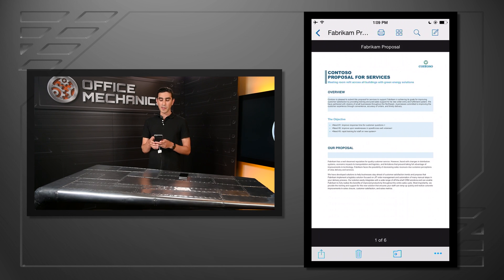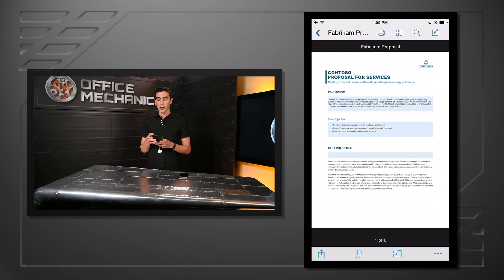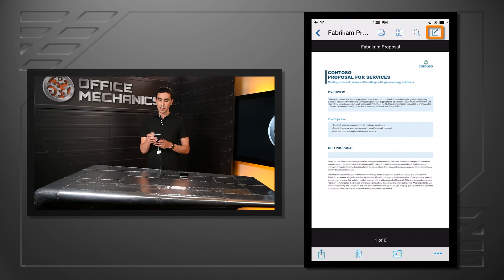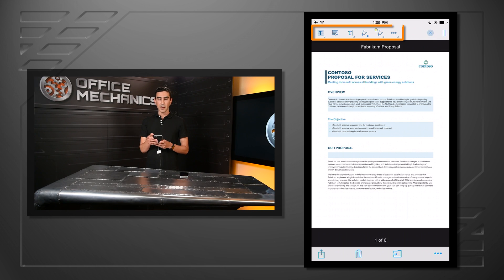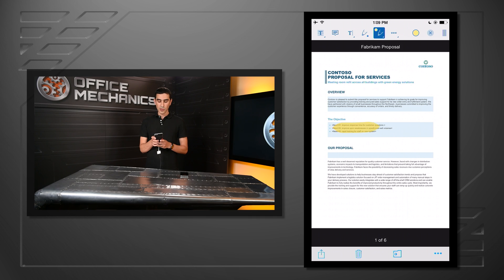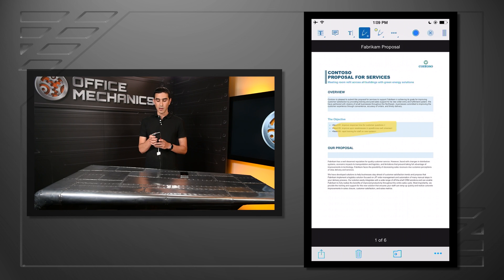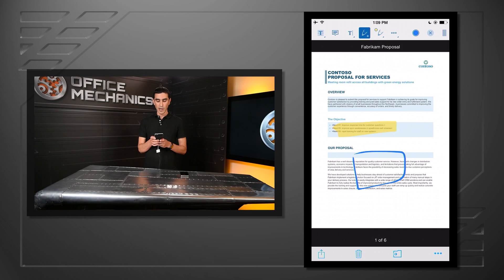I'm going to open up a PDF file right now, and you're going to notice that there's a new feature where I can now edit PDF files. I'm going to tap the Edit button. Now that I've done that, you can see there's a number of options. One of the options is that I can highlight some text. Another one of the options is that I can write on the document. Very handy features.